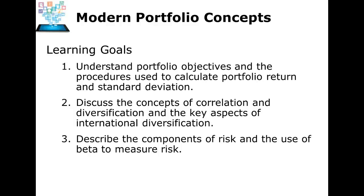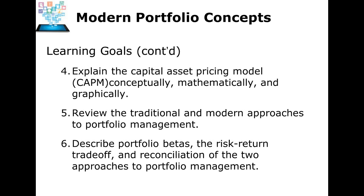Welcome to Part 1 of Chapter 5, Modern Portfolio Concepts. In this chapter, we're going to look at understanding portfolio objectives, how to calculate portfolio return, standard deviation as a concept in measuring risk in a portfolio, discussing the concepts of correlation, diversification, international diversification, and describing the components of risk and how to measure risk. The other learning goals — beta, capital asset pricing model, portfolio management, traditional and modern, and portfolio betas and risk-return trade-offs — we will move into in Part 2 of this lecture.